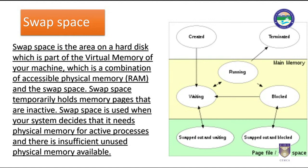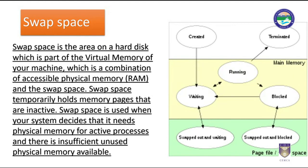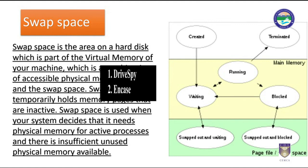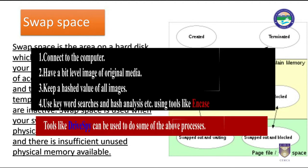On Windows, the swap file is a hidden file found in the root directory called pagefile.sys. The registry path of the swap file can be found at the key shown here. Several tools are available to retrieve slack space and swap space on Windows. Slack space can be retrieved using popular tools like DriveSpy and EnCase. The overall process of retrieving involves the following steps: connect to the computer, take a bit-level image of the original media, keep a hashed value of all images, and use keyword searches and hash analysis using tools like EnCase and DriveSpy.